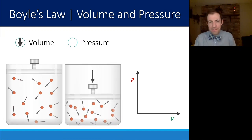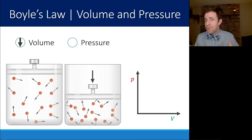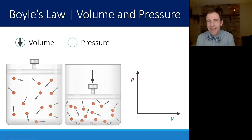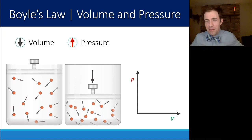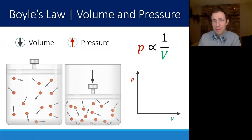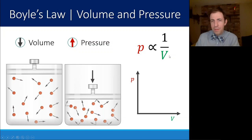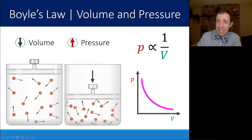If you decrease the volume, there's less empty space for those molecules to travel through, so they are going to be hitting the walls more frequently than they did in the larger space, because there are more walls per volume than before. So if the volume decreases, the pressure increases because you're having more collisions per second. The pressure is therefore inversely proportional to the volume — pressure is proportional to one over the volume. If the volume gets big, pressure gets small, and vice versa, giving that inverse relationship on a pressure-versus-volume graph.